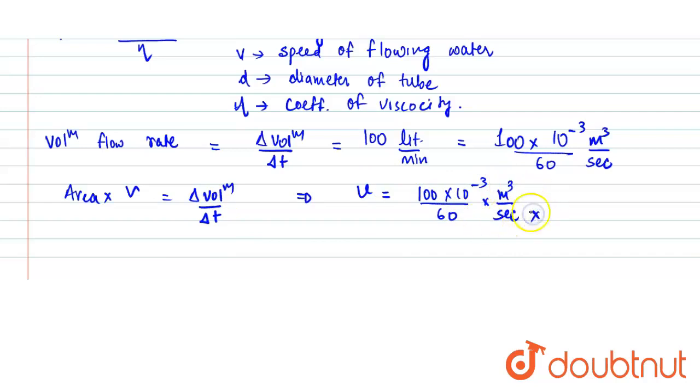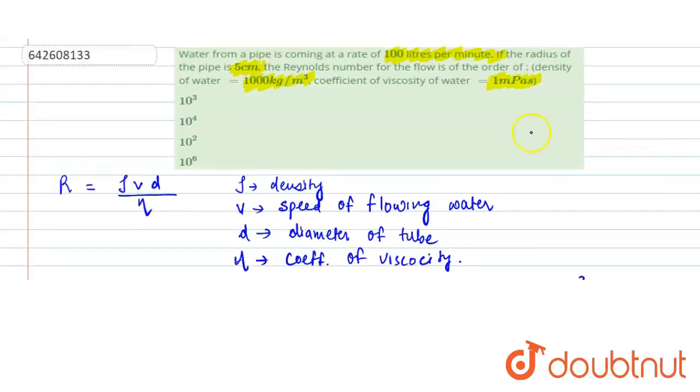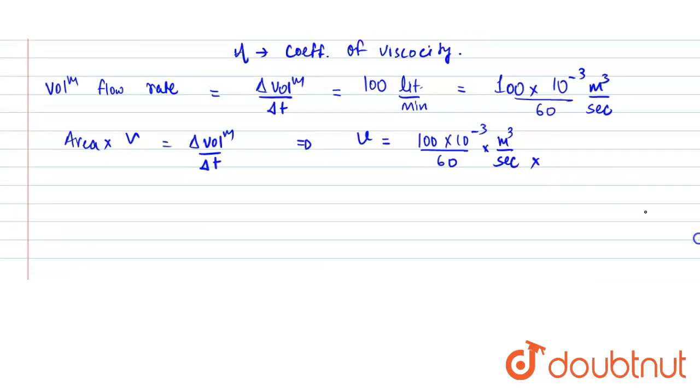divided by area. We are given the radius of the pipe as 5 centimeters, so area can be written as πr². So r is 5 × 10⁻² meters. From here we get the flow speed in meters per second, and that value is 2/3π meters per second.